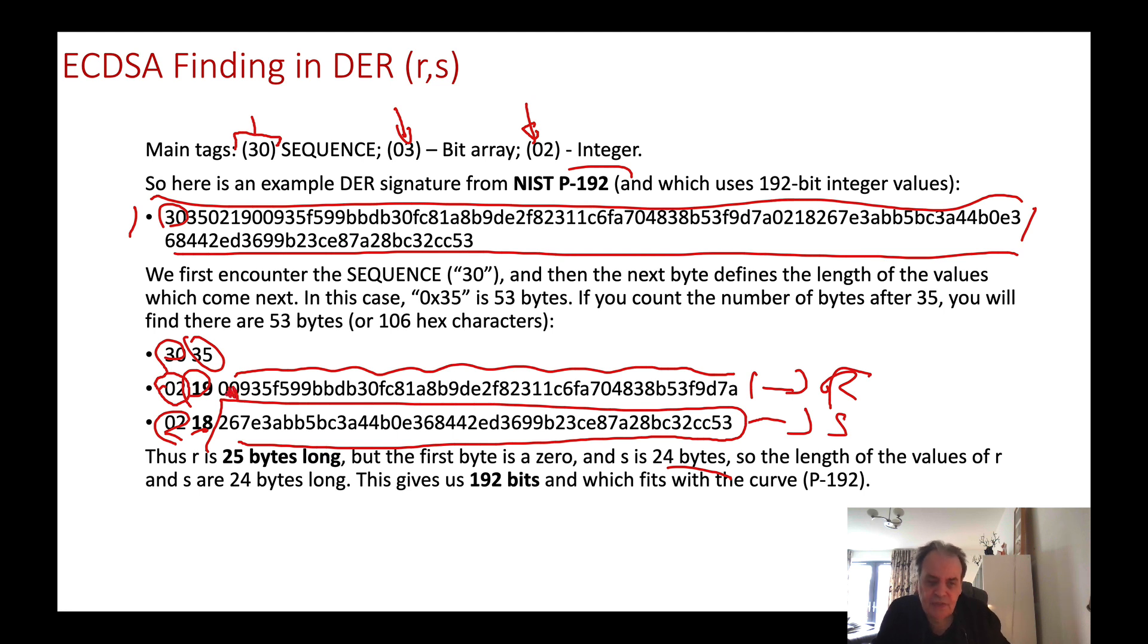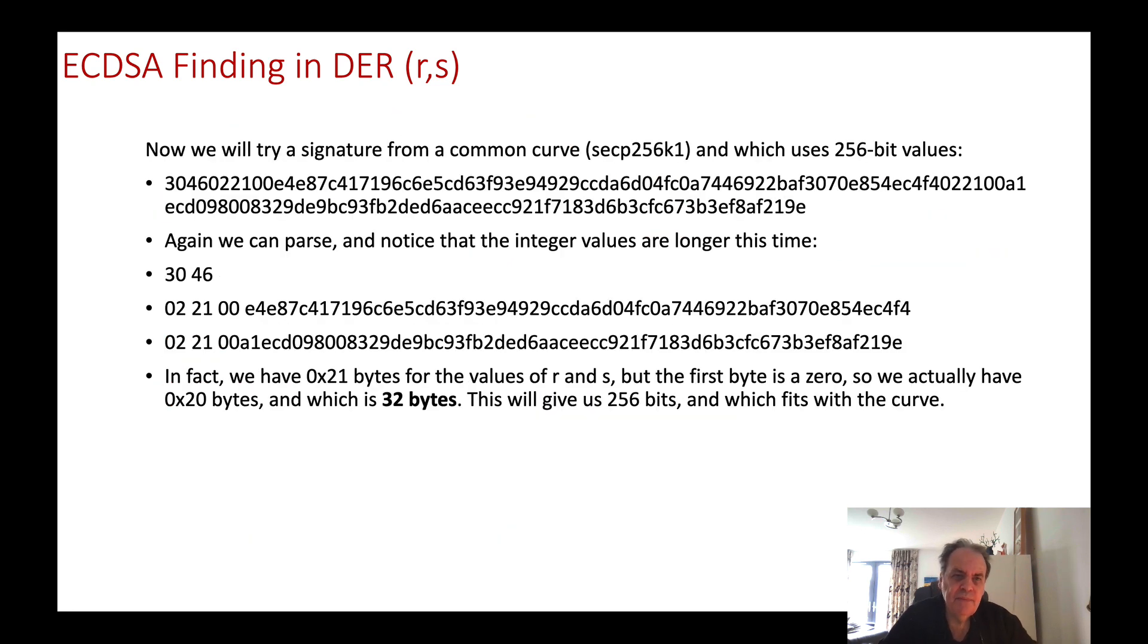We can see here there's 00, so we can ignore them. Both are of length 24 bytes. 24 bytes times 8 gives us 192 bits, which fits our curve because this is curve P192, which is a 192-bit curve.